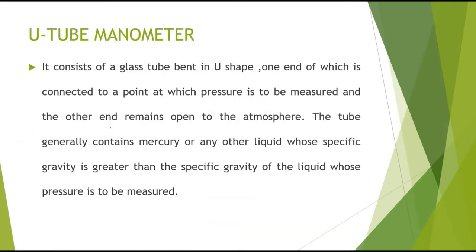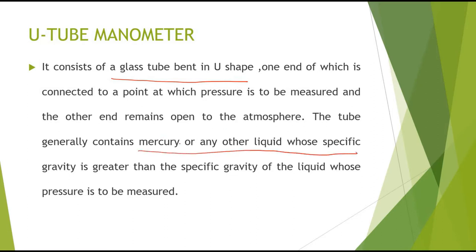Another type of simple manometer is the U-tube manometer. As the name suggests, it consists of a glass tube bent in a U-shape. One end is connected to the point where pressure is to be measured, the other end remains open to atmosphere. Inside the tube is a manometric fluid whose specific gravity is greater than that of the fluid being measured.